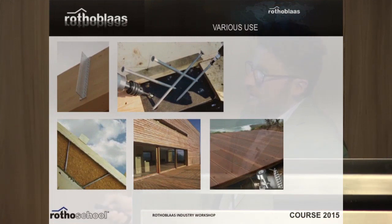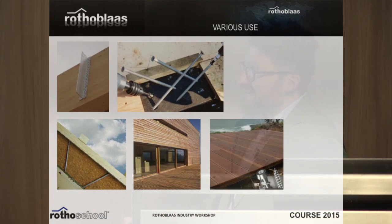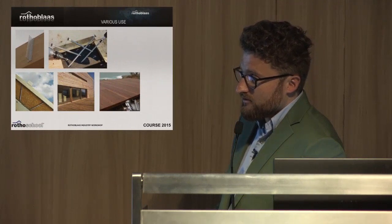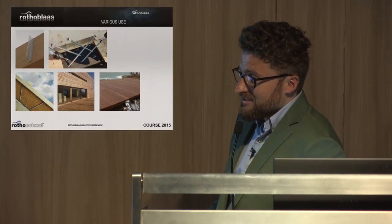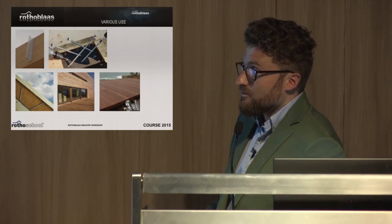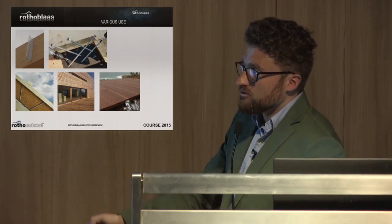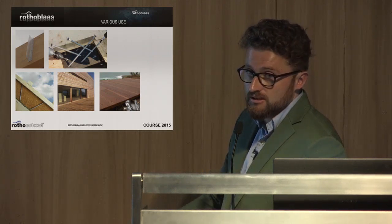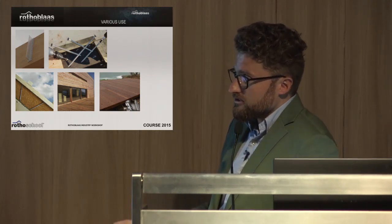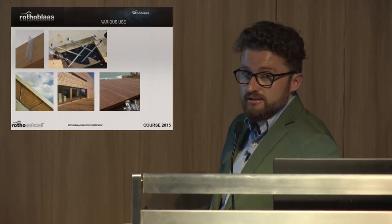Screws can be used inclined to install beam joints. Here they are used with a plate, inclined. Here it is for placing insulation — the rafter and the screws allow installing the roof part above the rafter with continuous insulation. So you don't have any interruption of the insulation, which is very important to avoid thermal bridging and energy waste. The double-thread screws are able to achieve this.